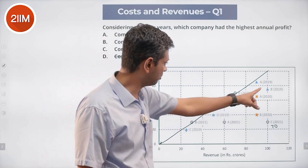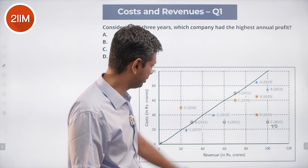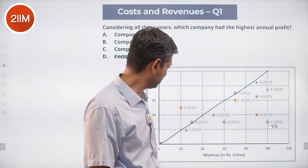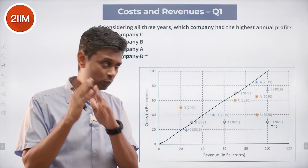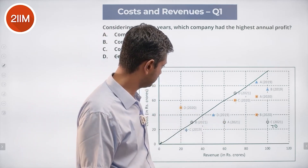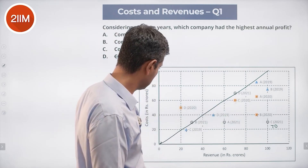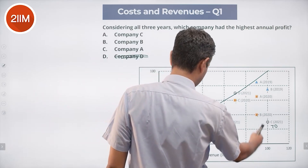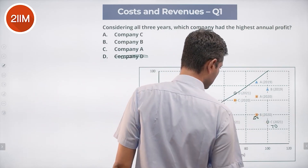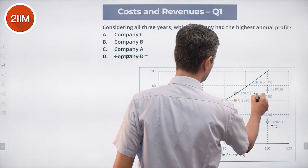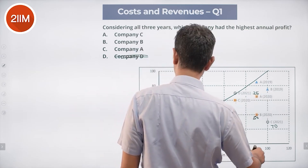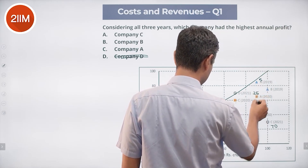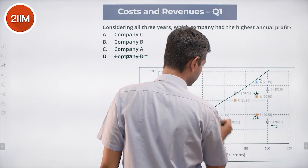B doesn't make much money in one year; cost is also high. There is a third B point here — this number is comparable. A is here, nicely profitable in two years, with a third A that's not so profitable. Let me compute: A in 2019 is 90 minus 40 = 50, in 2020 is 90 minus 65 = 25, and in 2021 is 90 minus 85 = 5. So A's total is about 80. C in one year alone is 70 crores — A is out.